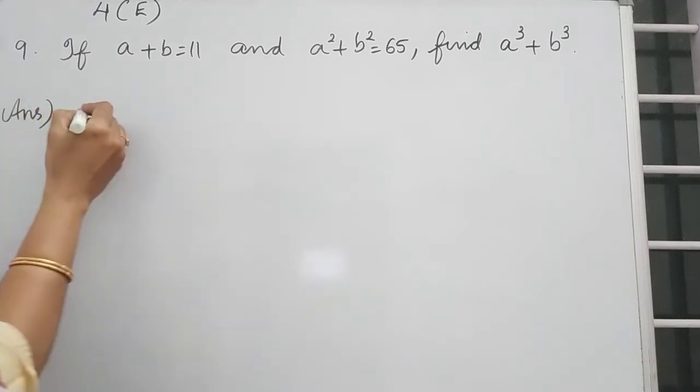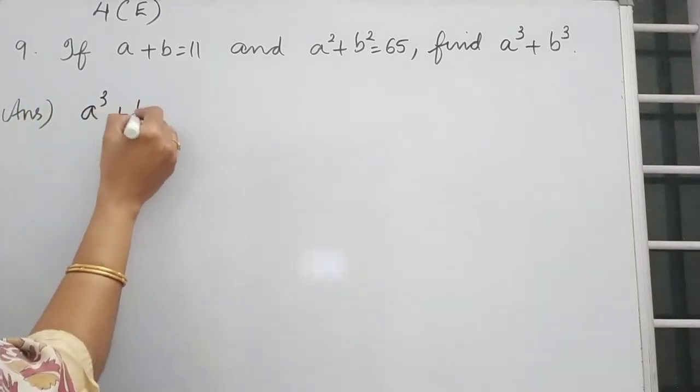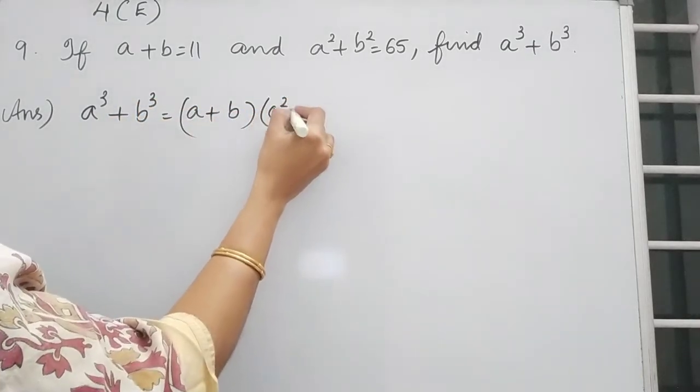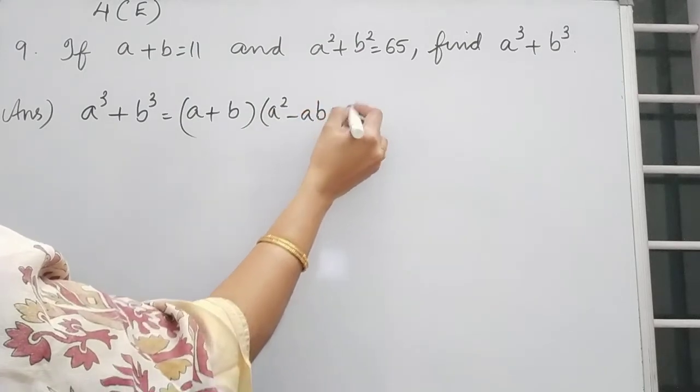So for finding A cube plus B cube, we have formula. A cube plus B cube is equal to A plus B into A square minus AB plus B square.